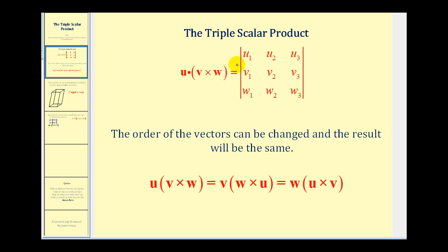The reason this formula is very convenient is that finding the cross product of two vectors and then dotting it with vector u takes quite a bit of work. Now we can just find the value of this three-by-three determinant instead. The nice thing about this is the order of the vectors can be changed and the result will be the same.